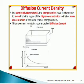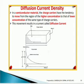Moving to another term: diffusion current density. In a semiconductor material, charge carriers have the tendency to move from the region of higher concentration to that of lower concentration of the same type of charge carriers. This movement results in a current flow which is called diffusion current, as clearly depicted in this diagram showing the movement of charge carriers inside the n-type material, with a graphical representation of the movement and concentration gradient.